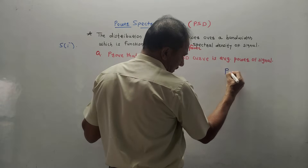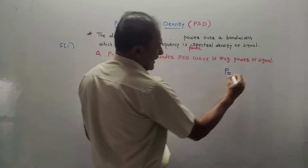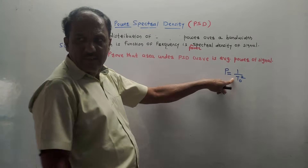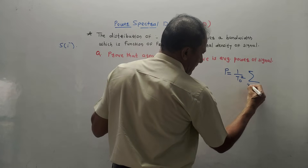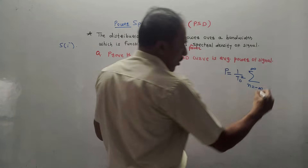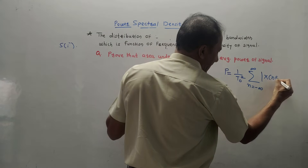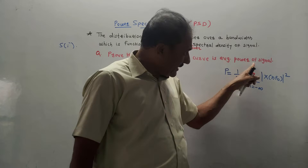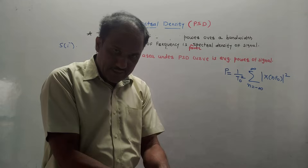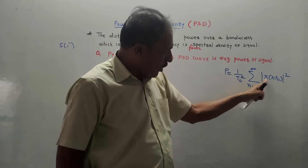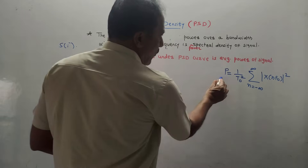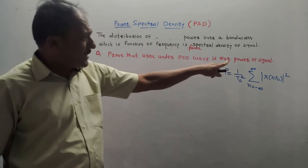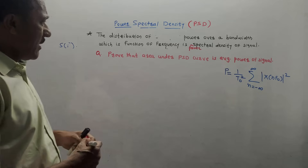This proof is simple — don't skip it. First, the formula to calculate average power of a signal, which you know from Signals and Systems: P = (1/T₀) · Σ(n = −∞ to +∞) |X(nf₀)|². Remember: if the signal is continuous, perform integration; if discrete, perform summation. This is the formula to calculate the power of a discrete signal.